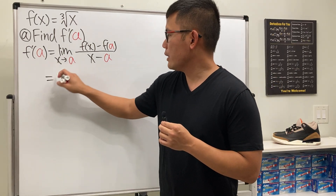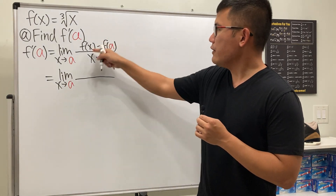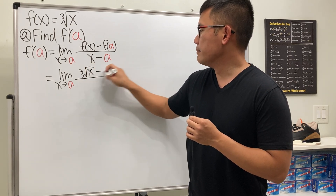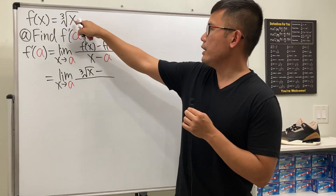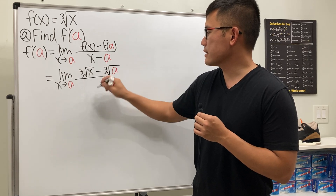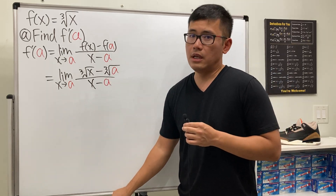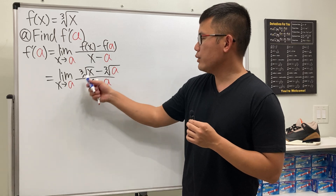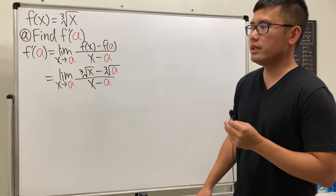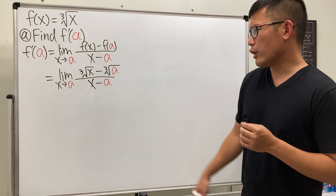We are looking at the limit as x approaches a, where f of x is just the cube root of x, minus f of a which is the cube root of a, all divided by x minus a. If we just plug a into x here, we end up with zero over zero — whenever you use the definition of the derivative it's always a zero over zero situation, so we must do some algebra to simplify.